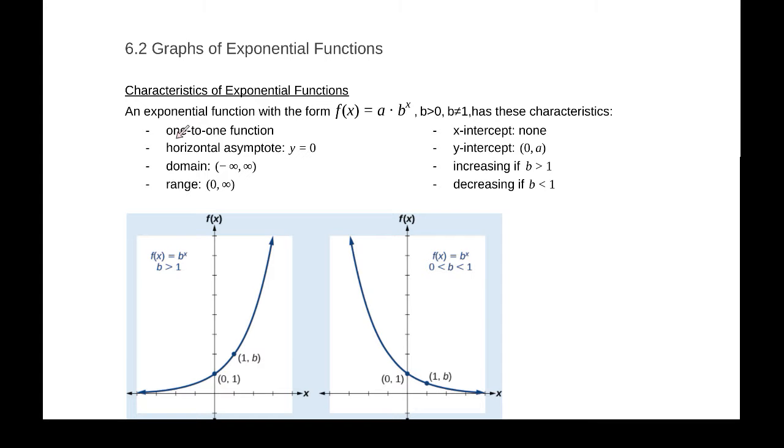First, they are one-to-one. Second, the horizontal asymptote of something of the form f(x) = a·b^x is y = 0. Now that function could be shifted up and down, which could change that.